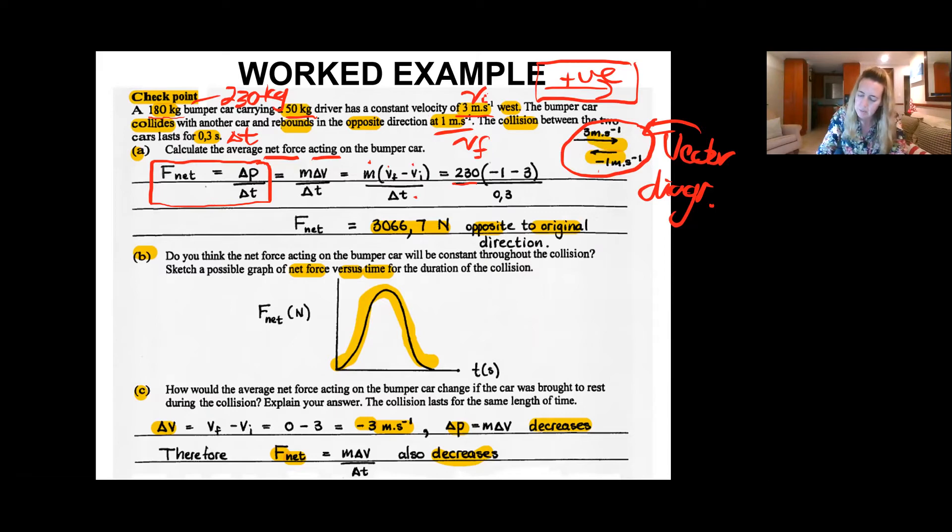You divide by the change in time, the collision period or interval, and that is 0.3 seconds. You work that out to be 3066.7 Newtons in the opposite direction to the original direction.